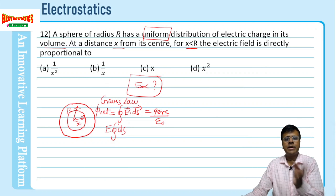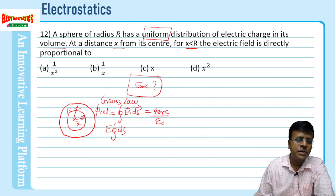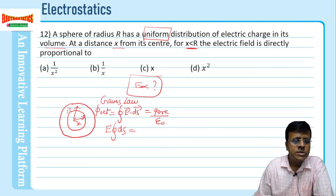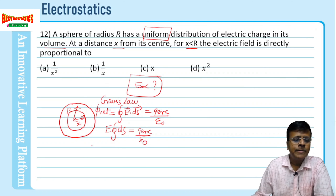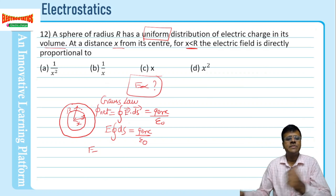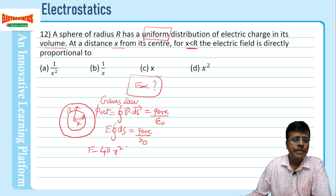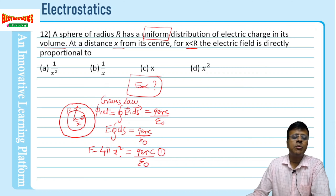I will write Gauss's law first. The net flux crossing this closed surface is mathematically given by E·dS, which equals the charge enclosed divided by ε₀. Since the properties of the Gaussian surface are satisfied, E comes out of the integral. So E times the surface area — which is 4πx² for a spherical surface of radius x — equals charge enclosed divided by ε₀. Let us call this equation number 1.